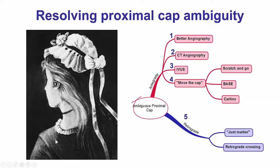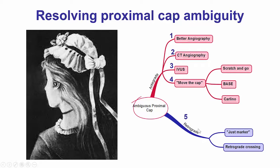This case demonstrates a solution for resolving proximal cap ambiguity, similar to this image where you can either see a young woman or an older woman. There are CTOs with proximal ambiguity that are hard to understand where the lesion starts. In those cases, especially when a bifurcation exists at the distal cap, using a primary retrograde approach can be very effective.